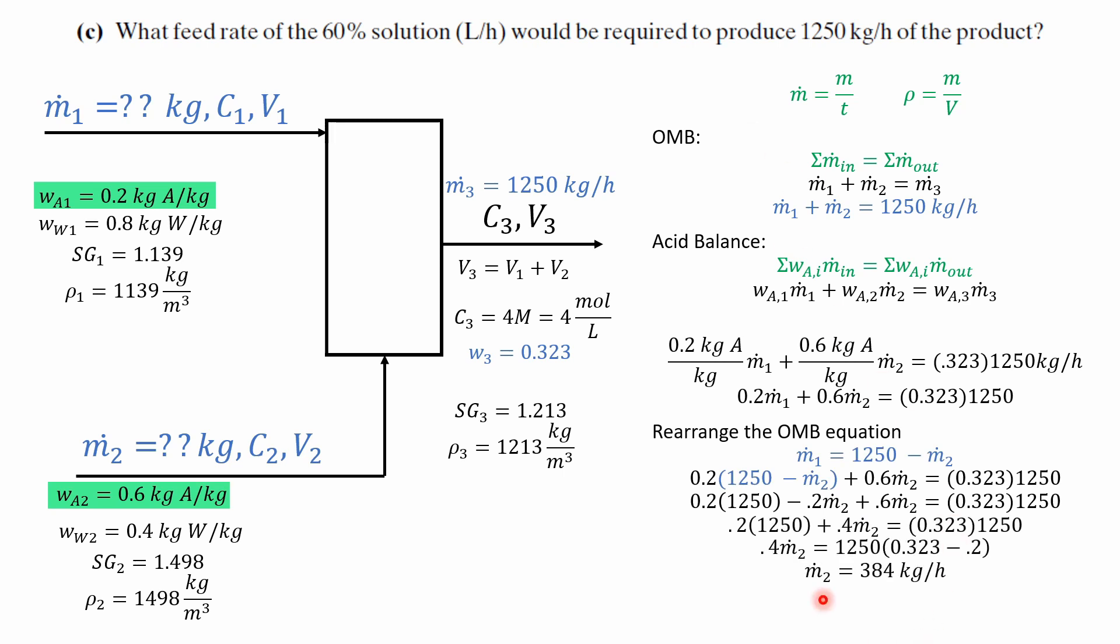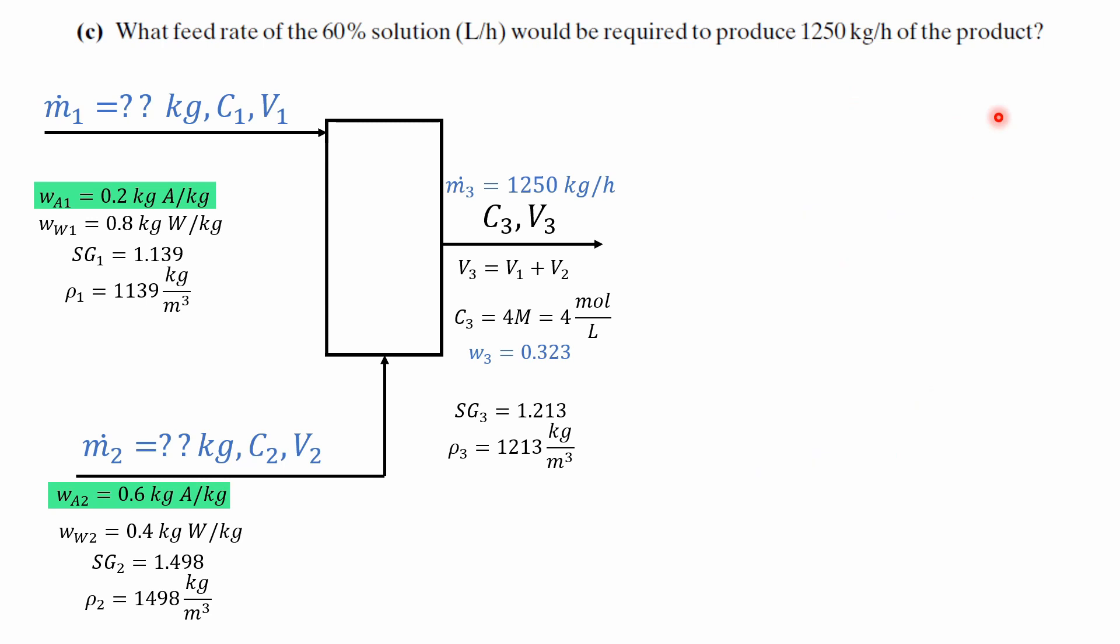we solve for the mass flow rate of stream 2 to be about 384 kg per hour and now we can use the density equation to convert into volume flow rate but there's an alternate method.